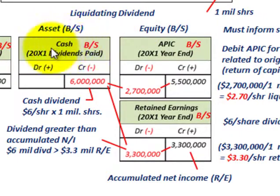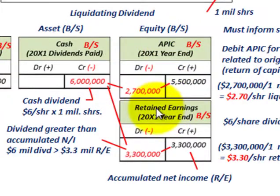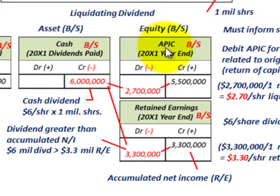We have this asset on our balance sheet — our cash account — and then we have our equity accounts on our balance sheet. We're looking at the additional paid-in capital and also our retained earnings, and how we divide up this dividend between the additional paid-in capital and the retained earnings.